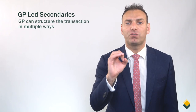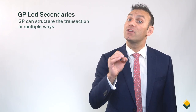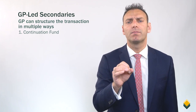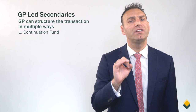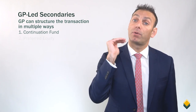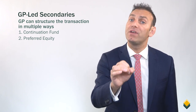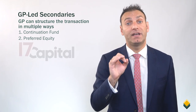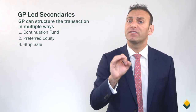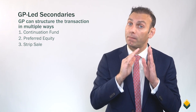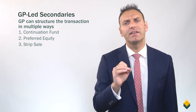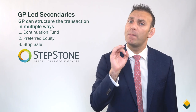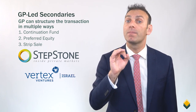The GP can structure the transaction in multiple ways. It can create a new vehicle called a continuation fund to buy the company or companies from the existing private equity fund. The GP can get preferred equity, where a new investor offers preferred equity financing to give certain LPs liquidity — 17 Capital is a leader in this space. The GP can also conduct a strip sale, where a fraction of the fund's investments — or a strip — are sold to give certain LPs liquidity. An example of this is the $160 million strip sale in early 2022, where Stepstone Group bought a fraction of the remaining portfolio companies of Vertex Venture Israel's fourth flagship fund.